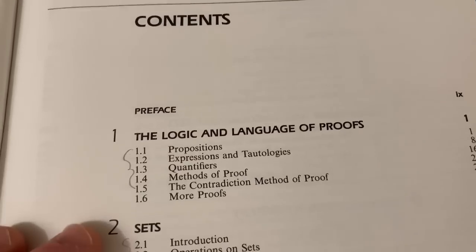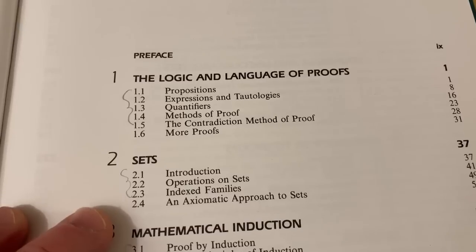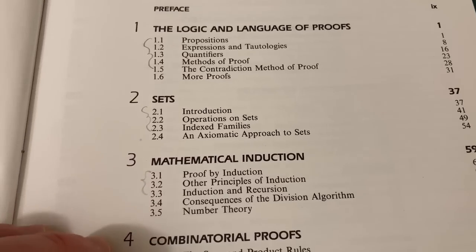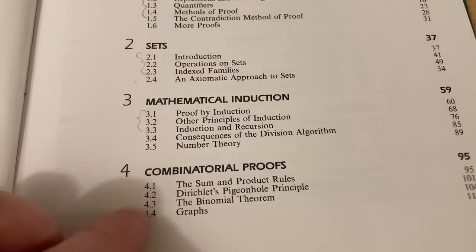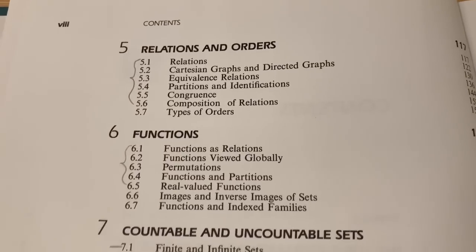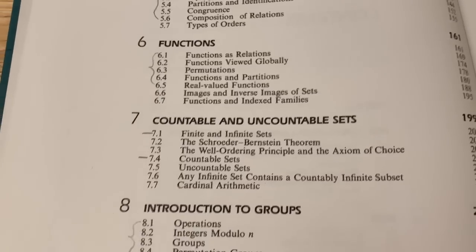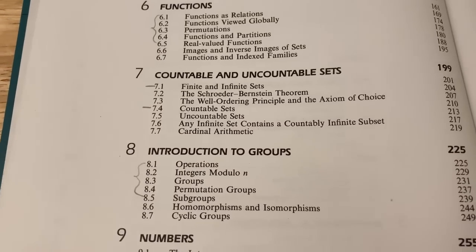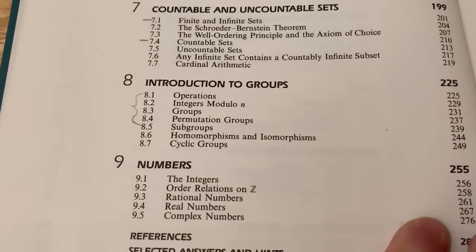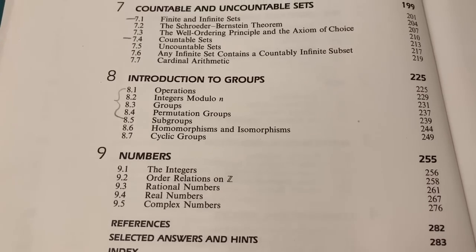The contents are fairly standard. It goes on to sets, induction, and combinatorial proofs. Chapter five is on relations and orders, six is on functions, seven is on countable and uncountable sets, eight is on an introduction to groups, and then nine talks about numbers and there's some answers and hints to some of the problems.